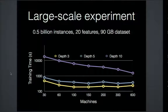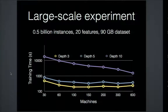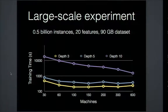We then performed a larger-scale experiment on real Yahoo click log data. This was a regression problem with half a billion instances and 20 features, taking 90 gigabytes of distributed shared memory on a Spark cluster. The x-axis shows number of machines ranging from 30 to 600; the y-axis shows training time in seconds. The yellow curve is a tree of depth 3, blue is depth 5, and purple is depth 10.